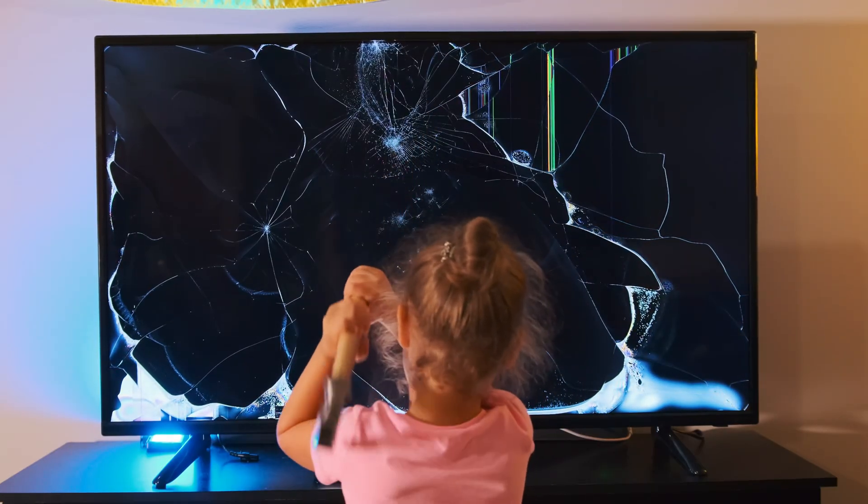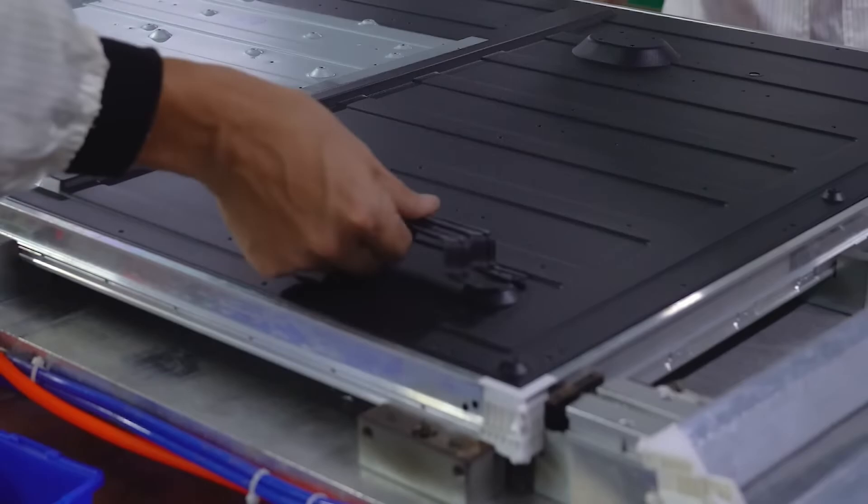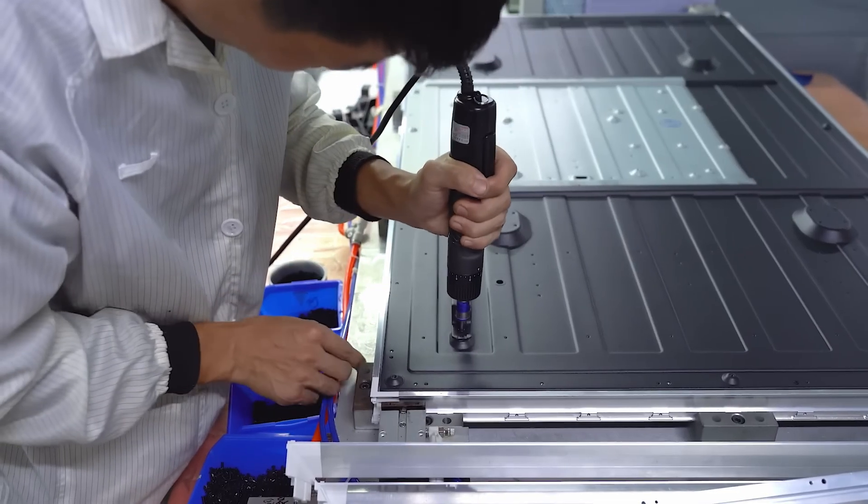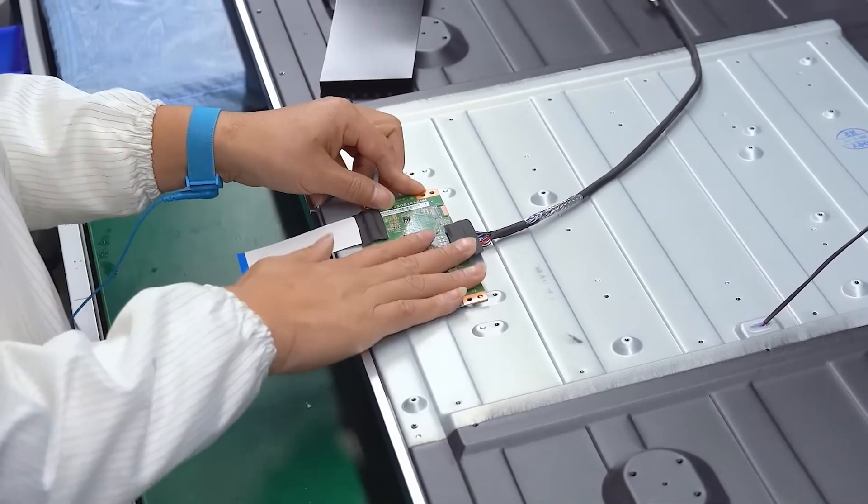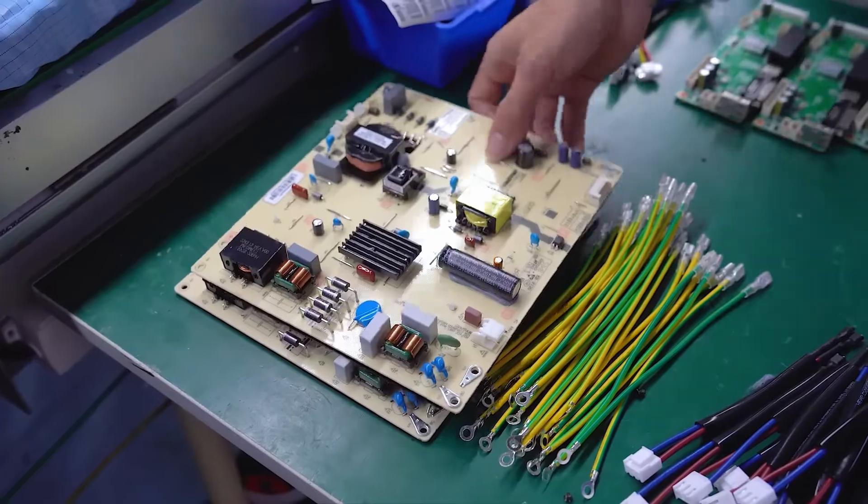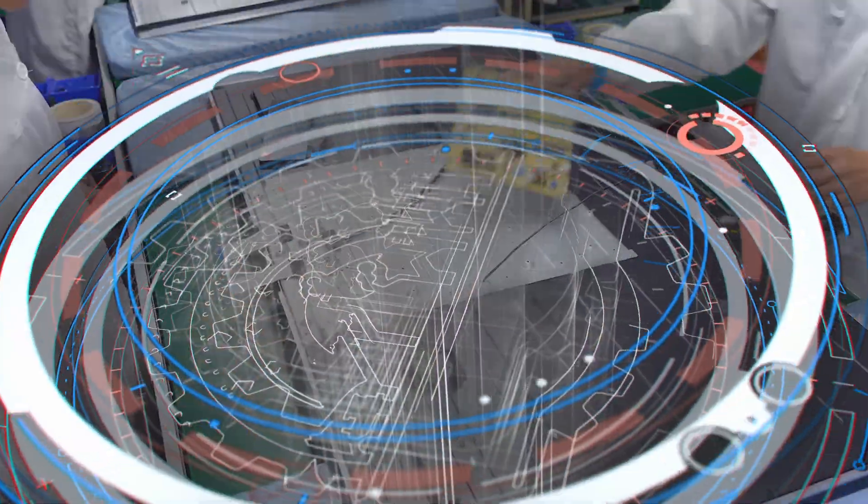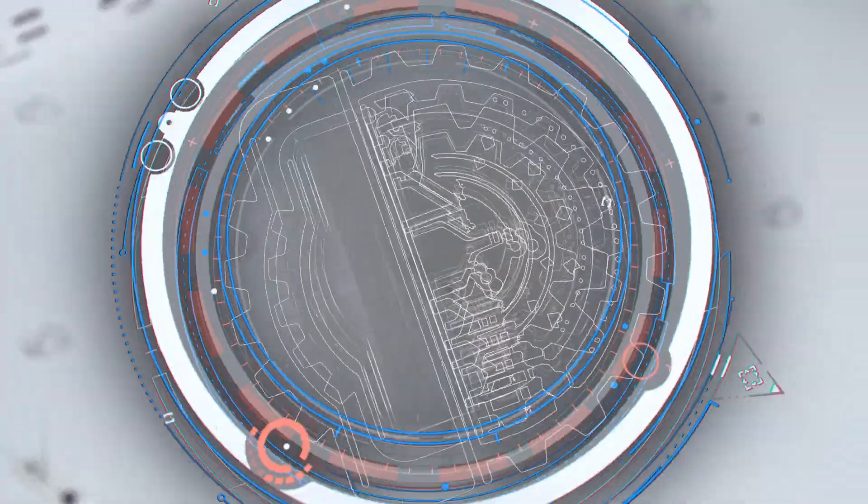But what does it take to bring these displays from raw materials to the finished product in your living room? In this episode of How It's Manufactured, we're diving deep into the complex and fascinating process of creating LCD TVs.